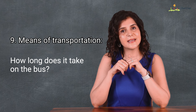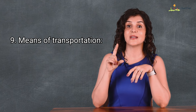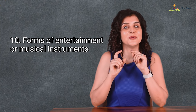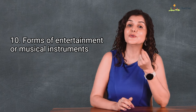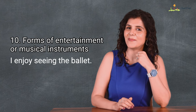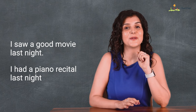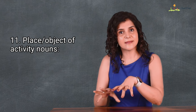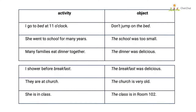For means of transportation, use the definite article to refer to the whole transportation system rather than an individual vehicle: how long does it take on the bus? The subway is quicker. If using the construction by plus means of transport, no article is needed: I go by subway; I usually travel by train. For entertainment and musical instruments, use the definite article when referring to a form in general: I enjoyed seeing the ballet; she plays the piano; he plays the flute. For a particular event, use the indefinite article: I saw a good movie last night; I had a piano recital last night.